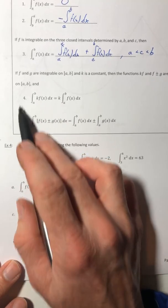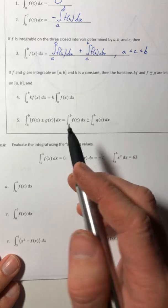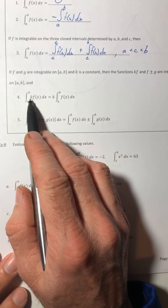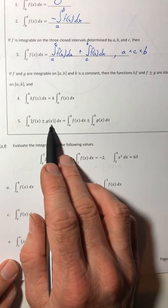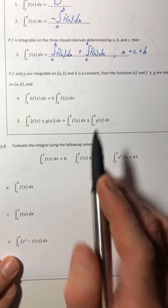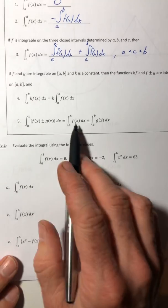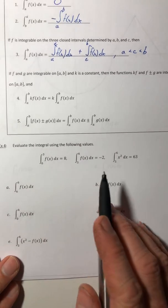Okay, and then the next two properties are kind of just like derivatives. If you've got a constant in there, you can pull it out to the front. If you have more than one term on the inside, you can integrate each term separately and then add or subtract them at the end.